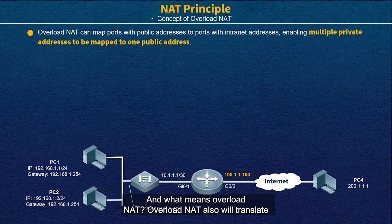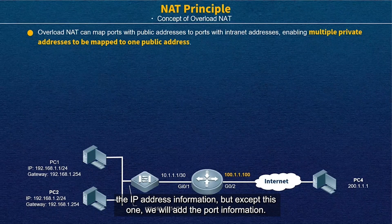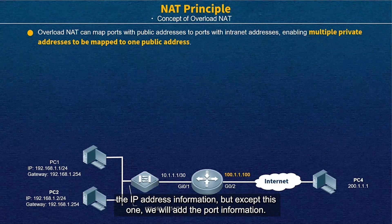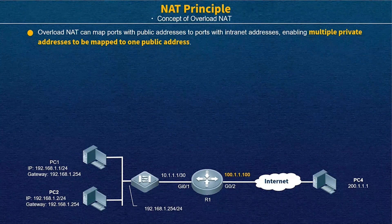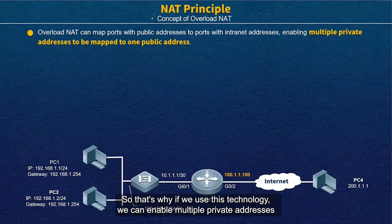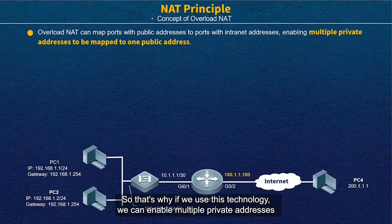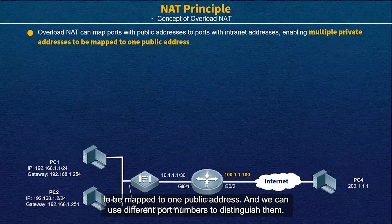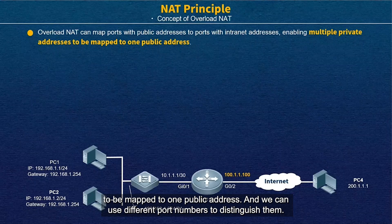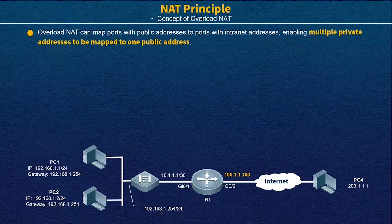Overload NAT also translates the IP address information, but in addition to this, we will also add the port information. That's why if we use this technology, we can enable multiple private addresses to be mapped to one public address, and we can use different port numbers to distinguish them.